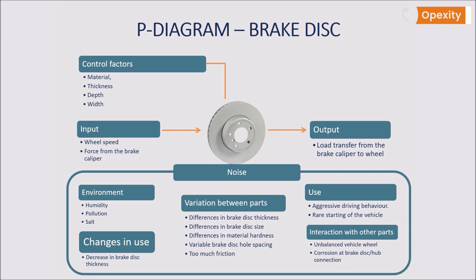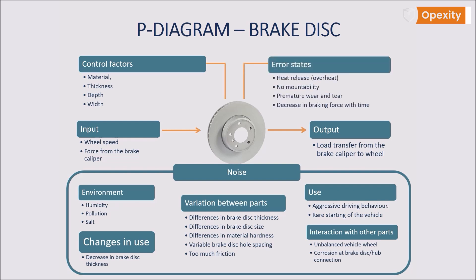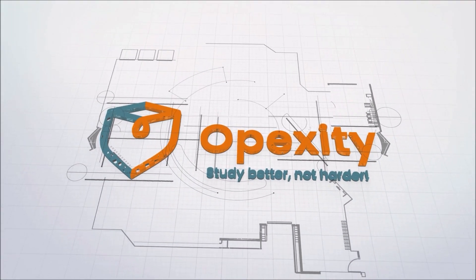The last element of the P diagram are error states, which may affect mountability, functionality, and safety. In the case of our brake disc example, this can be premature wear and tear, inability to mount, change in braking force over time, or heat release effects leading to overheating of the brake disc.